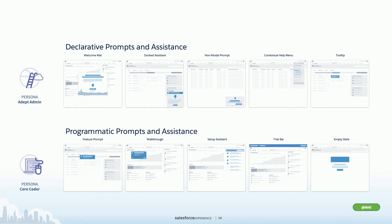We're working to build declarative tools on our Lightning platform to create all of these patterns. Today you could build some with point-and-click tools in setup; others may require custom code or a partner solution like Pando, WalkMe, or Improved Apps. All the guidelines presented come from the perspective of designers and developers working on and off core. The best practices apply whether you're working on Lightning, Heroku, or a completely custom-built app — the concepts apply to anything in our ecosystem.